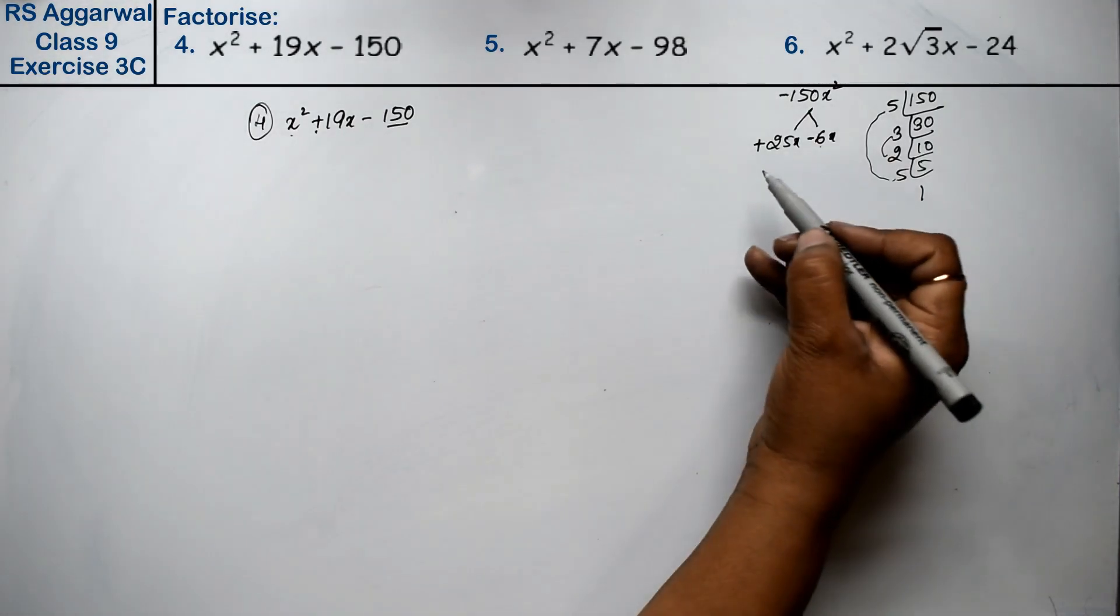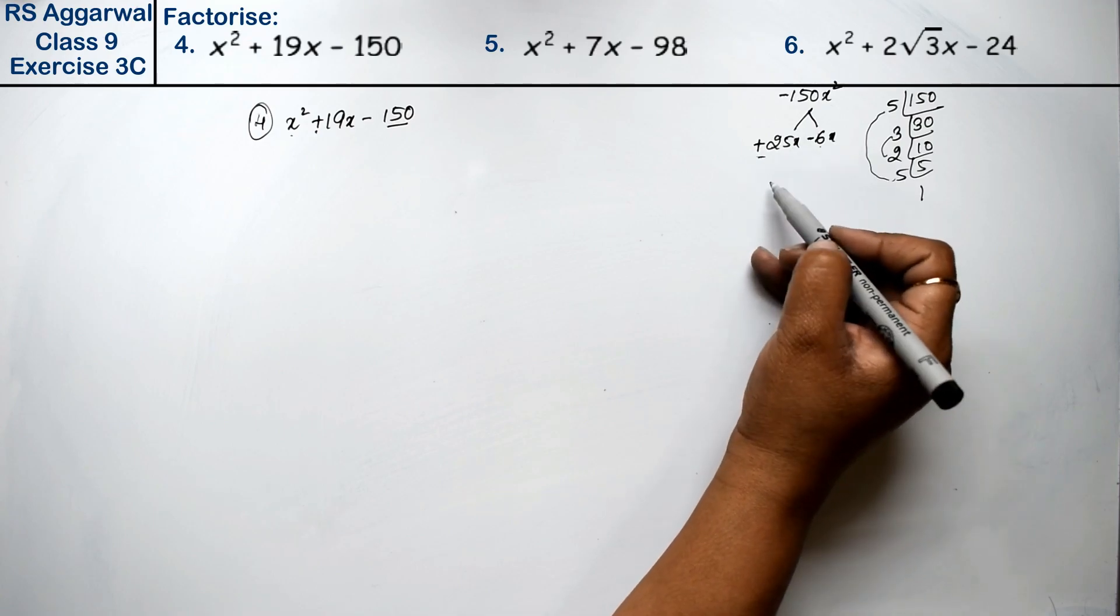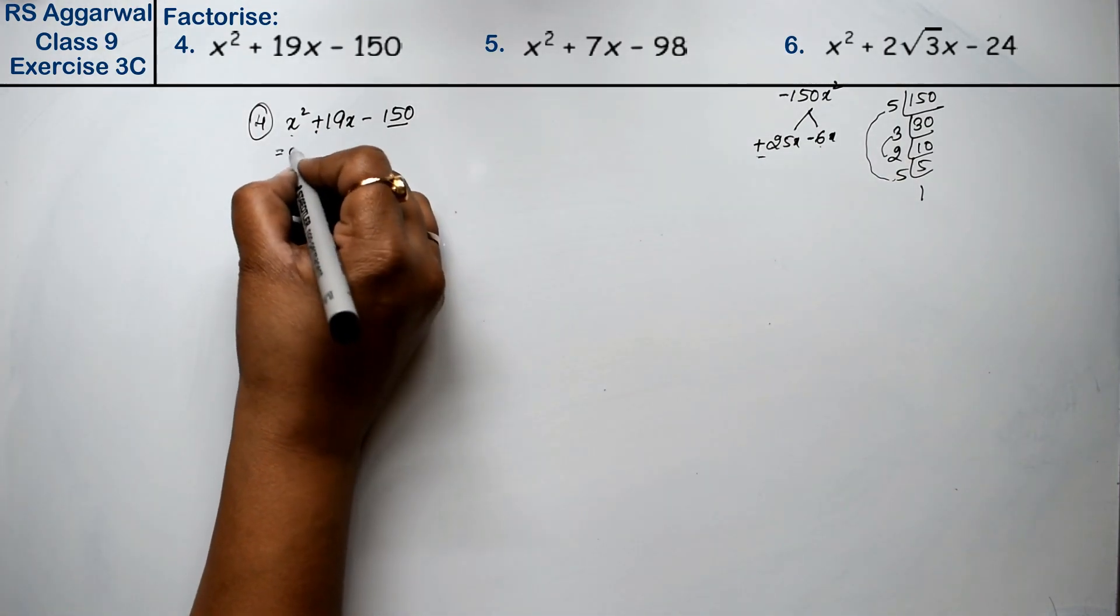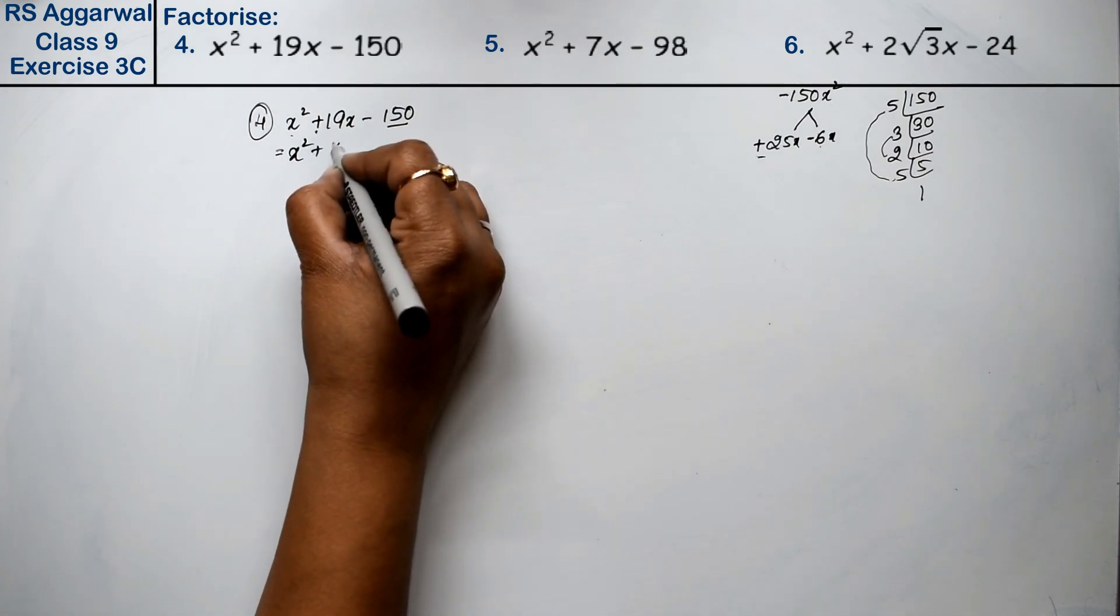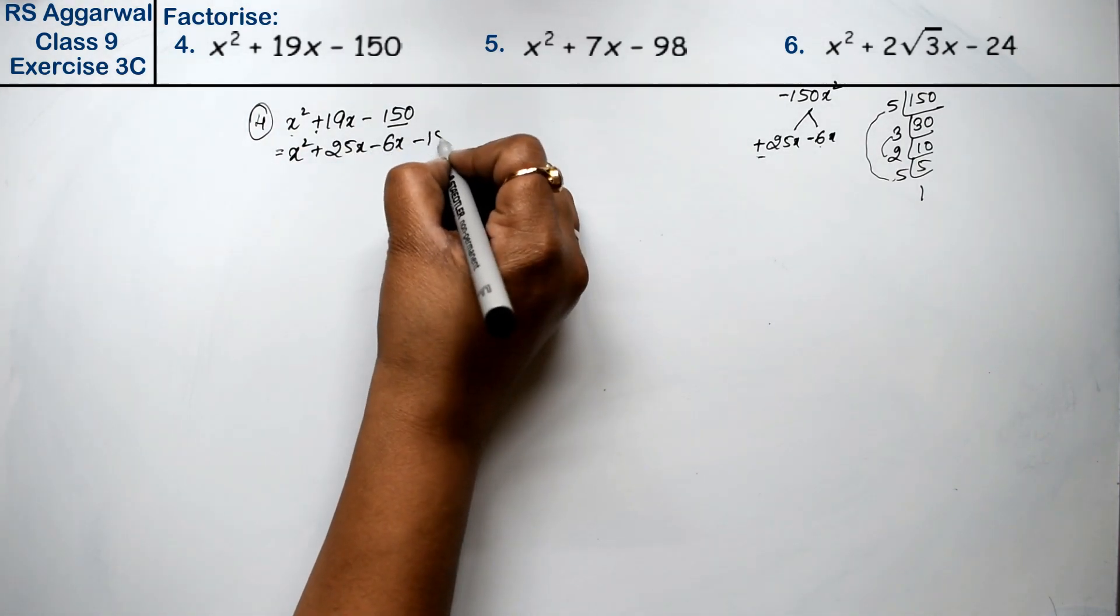If I multiply plus minus, then it will be minus. And if I subtract the signs, then the sign will be plus. So let's write this: x square plus 25x minus 6x minus 150.